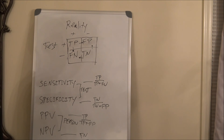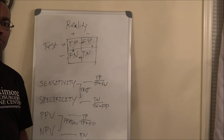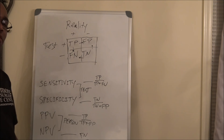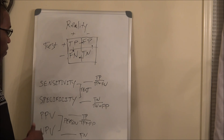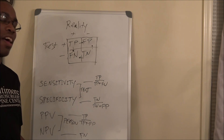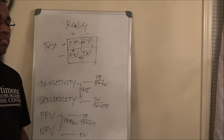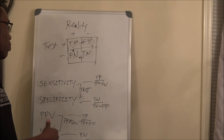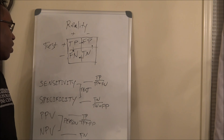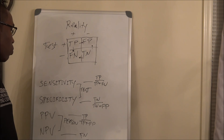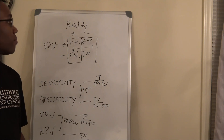There is a mnemonic you can use for sensitivity and specificity: SpIn and SnOut. The test you want to rule out is sensitivity — SnOut — and the test you want to rule in — SpIn — is specificity.